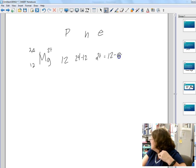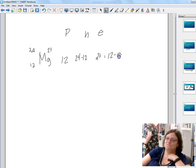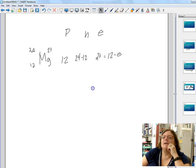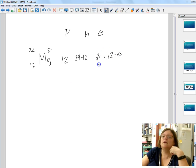So if you've got 12 protons, how many electrons must you have? 12 minus what would give you 2? Ten, so there are 10 electrons.